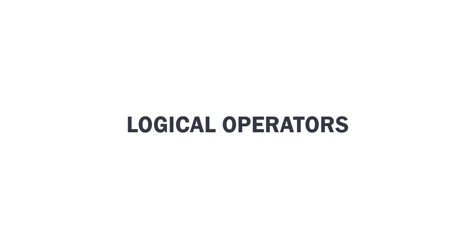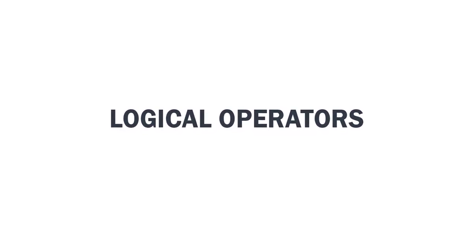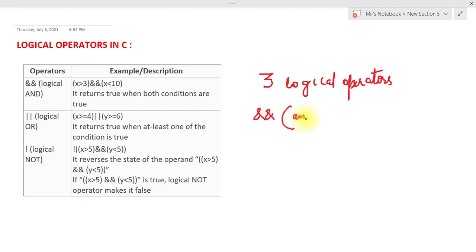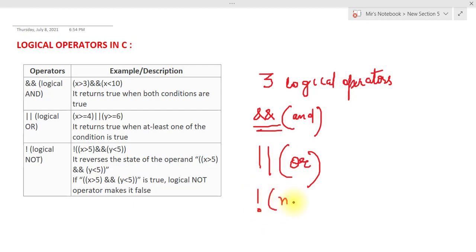In today's video we are going to discuss logical operators in C. Logical operators are those kinds of operators which help us perform logical operations in our programs. In C we have three logical operators: the AND operator, represented by two ampersand symbols; the OR operator, represented by two pipe/slash symbols; and the NOT operator.